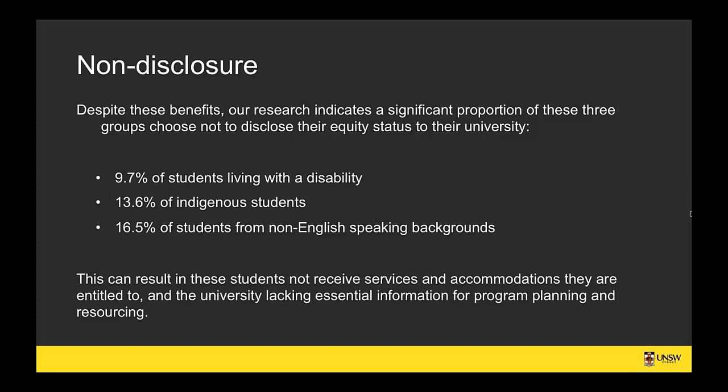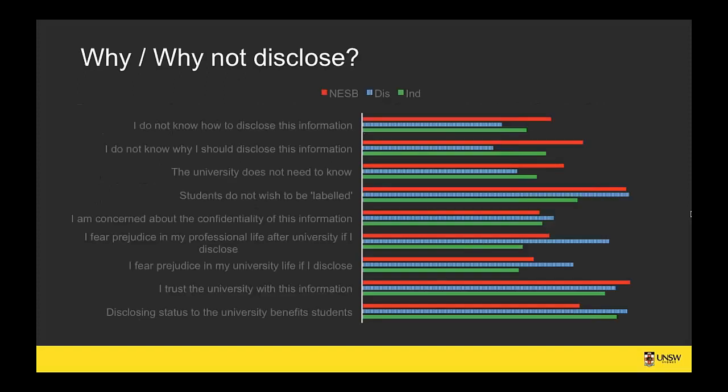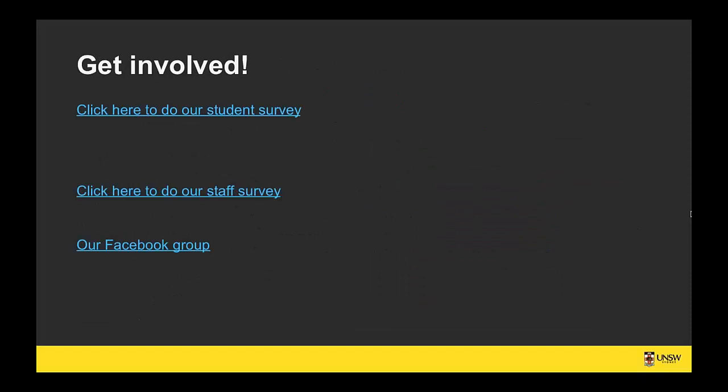Another factor briefly touched on in this research is that with disabilities, students can have multiple disabilities. How do universities cope with managing that level of information? How do we capture that data? And do students disclose all of their disabilities, or only what they feel is relevant or necessary at the time?